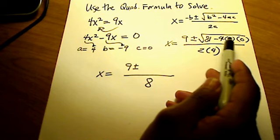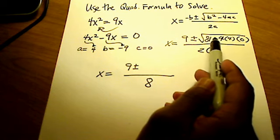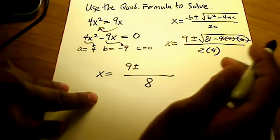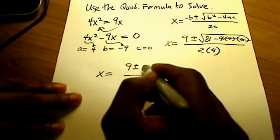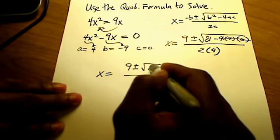So I really have 81 minus 0, and 81 minus 0, because all of this stuff cancels out. 81 minus 0 is just 81, so I have the square root of 81 up top.